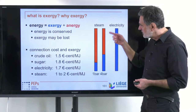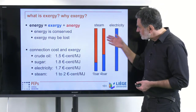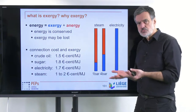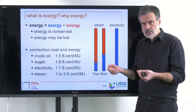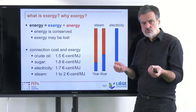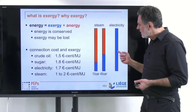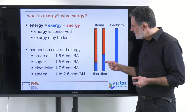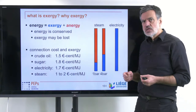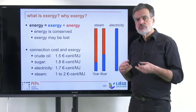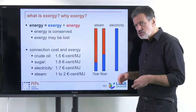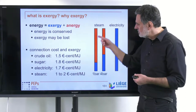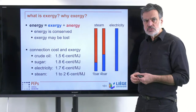In blue is the exergy. The energy for all three cases is identical, and you see that electricity is 100% exergy — you can heat something up, drive a motor, or anything; you can freely convert it. That's pure exergy. Steam at different pressures has different exergy contributions: the higher the pressure, the higher the exergy contribution; the rest cannot really be used.